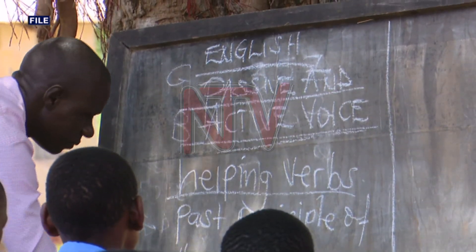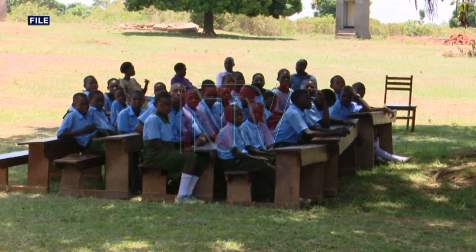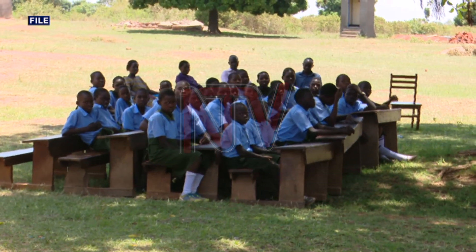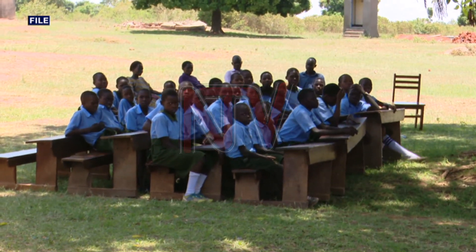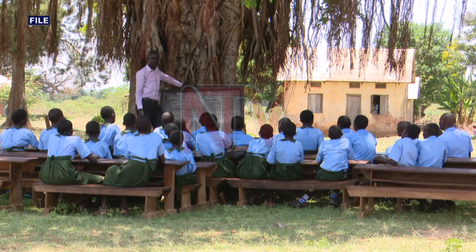We have moved from 20% reading capacity to 70% reading capacity in the districts where we are operating the reading program. Currently, there are 65 speech communities in Uganda, each with its own language, but none of these is spoken by the entire population of Uganda.